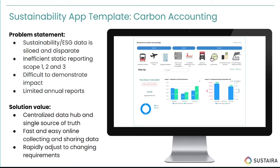Within sustainability and ESG as a whole, data tends to be siloed and disparate. Data being all over the place and manual doesn't change here either. The big thing to focus on is specifically that external data. As you dive into scope three and you're trying to see the impact of your value chain or your suppliers, that is where it's extremely challenging to gather the correct data accurately. This ties to the next point with inefficient static reporting around scope one, two, and three.